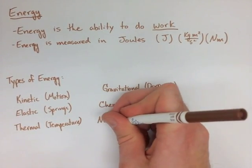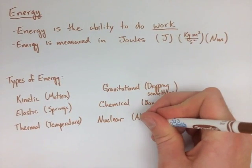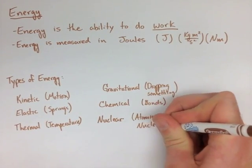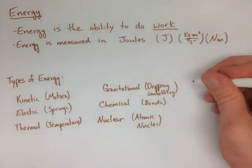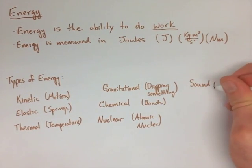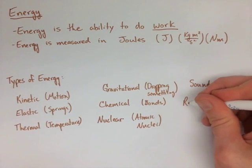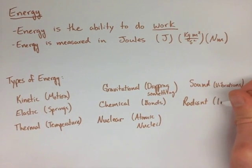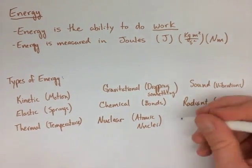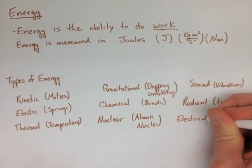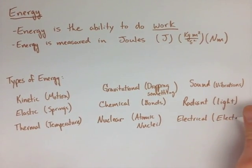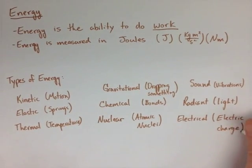If we have something that's up high, it has a large potential gravitational energy, so dropping something. Chemicals. When we break bonds, we create energy. Nuclear. When we have atomic nuclei, so that's like when we're splitting atoms. Sound, we have vibrations. Radiant, which is light. And finally, electrical, which is electric charge.